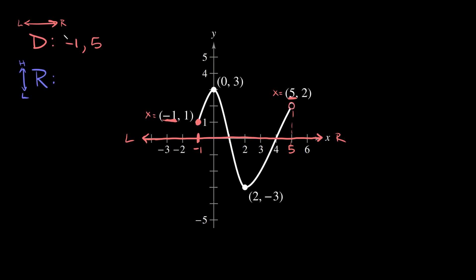Around negative 1 we use a bracket because there's a closed circle at that point, and around positive 5 we use a parenthesis because there's an open circle. So that's the domain. Now let's find the range — the highest point and the lowest point on the graph. The highest point is at 0, 3 where there's a closed circle, and the lowest point is at 2, negative 3 where there's also a closed circle.